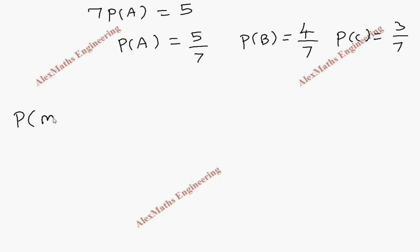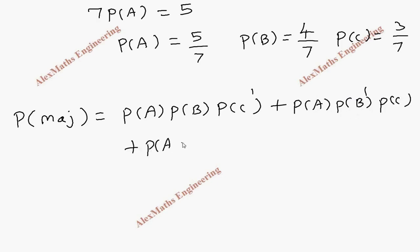So probability of majority equals P(A) P(B) P(C) where two are favoring, one is not favoring. So C is not favoring. In the same way, P(A) P(B') P(C) where B is not favoring. And in another case, out of A, B, and C, A is not favoring.